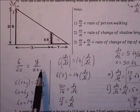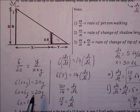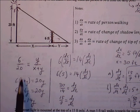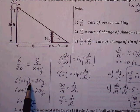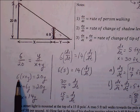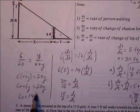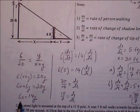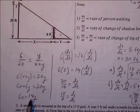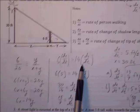dx/dt is the rate at which the person is walking. If the person is walking away from the lamppost, this x distance is going to be increasing over time, so dx/dt will be positive. If the person is walking towards the lamppost, the rate of change of x decreases, causing dx/dt to be negative. dy/dt is the rate of change of y — the rate of change of the length of the shadow. As the person walks away from the lamppost, they cast a longer and longer shadow, causing dy/dt to be positive.